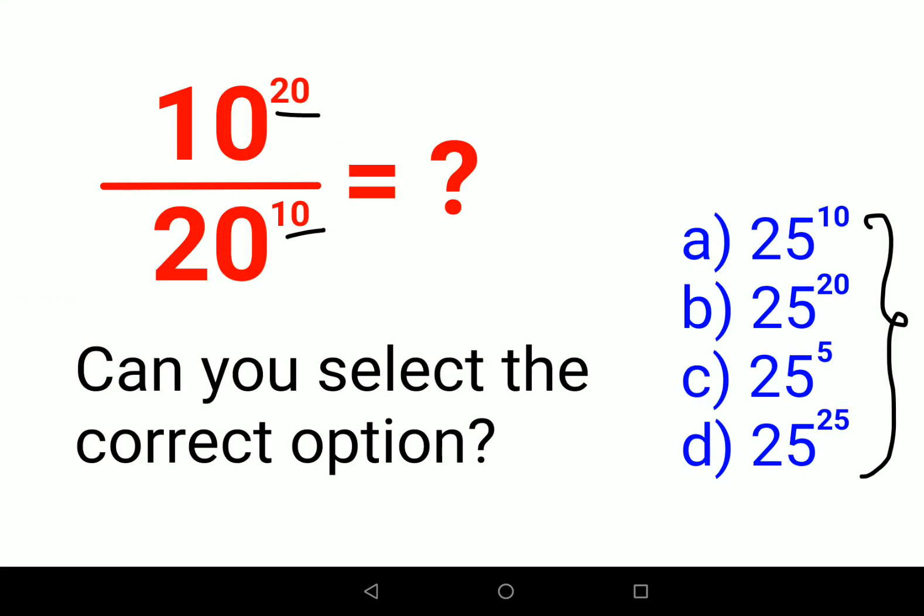25 raised to something. This has come out to be 5 raised to 10. So let's write this as 5 raised to 2 times 5. And like we said, we can